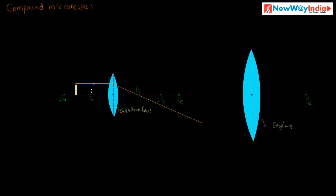Rays parallel to the principal axis, after refraction, pass through the principal focus of the objective lens. Another ray passes through the optical center. These two rays meet at a point where the magnified image is formed — beyond the center of curvature of the objective lens. The object is AB and the magnified, inverted image is A1B1, formed beyond the center of curvature of the objective lens.